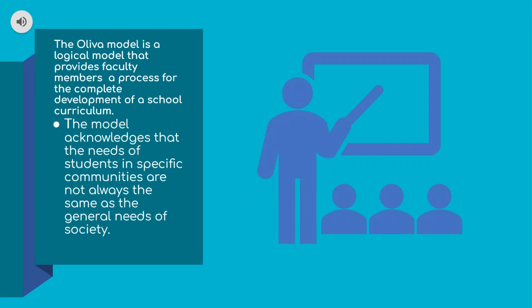The Oliva model is a logical model in the sense that it provides faculty members a process for the complete development of a school curriculum. This is something we do not usually see in our public school system, because 99% of the time we are handed a curriculum we must follow. It would be reasonable for teachers to have the power to develop their own curriculum. The model also acknowledges that the needs of students in specific communities are not always the same as the general needs of society, because every student, every area, every zone, and every city has its own problems and issues to deal with.